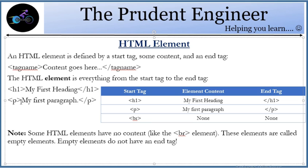If you want to write a paragraph, you write P, then your content, then close it. However, there is an exception — some elements like BR, the line break element, do not need a closing tag. Unlike headings and paragraphs where you always need a closing slash tag, you don't need a closing slash BR — it's just a simple break. There are some elements like that which have no closing tag.